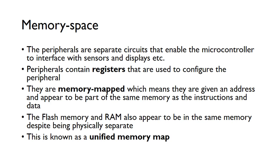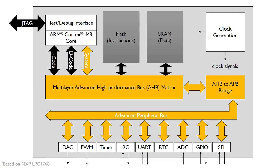The peripherals are completely separate circuits that enable the microcontroller to interface with sensors, displays, and actuators. The peripherals themselves actually contain registers — a small amount of memory used to configure the peripheral. Going back to the diagram, we've got the flash memory for instructions, the RAM containing the data, and then each of these peripherals also contains a small amount of memory in the form of registers used to configure their behaviour. So there are three kinds of memory blocks: the flash, the RAM, and the memory associated with the peripherals.